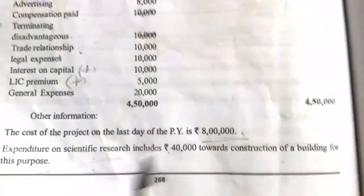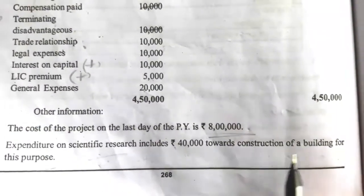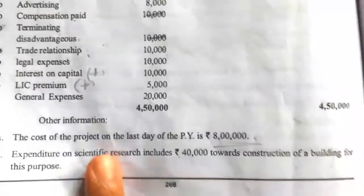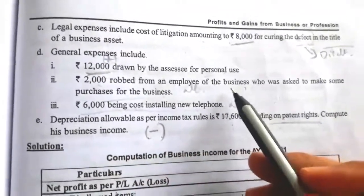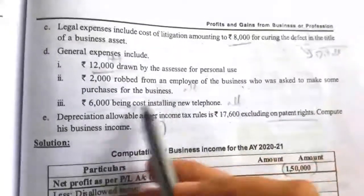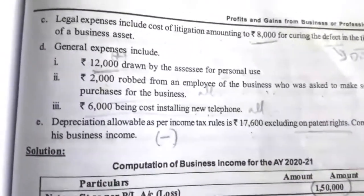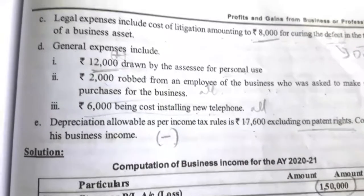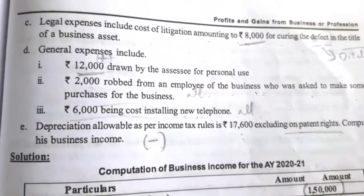Note 4: Scientific research expenditure includes expenses relating to construction of a building for this purpose — taken as allowed business expenses. Note 5: General expenses include the amount robbed from an employee making purchases for the business, as well as cost of installing new telephone — both taken as allowed business expenses. This concludes Illustration number 15.